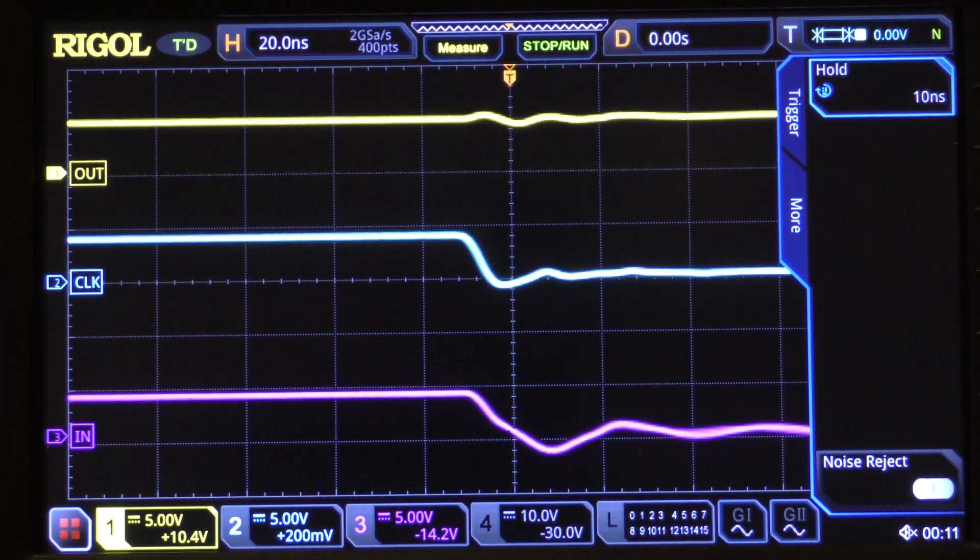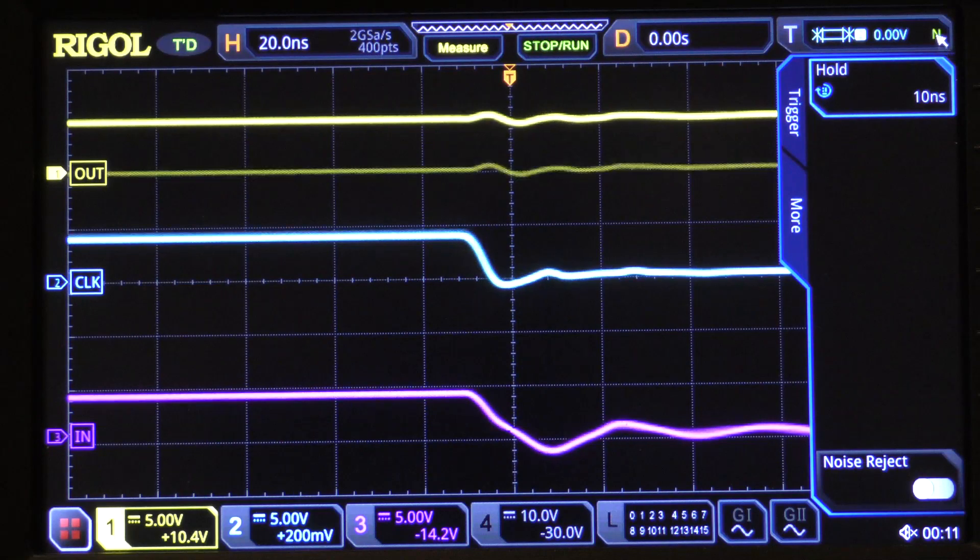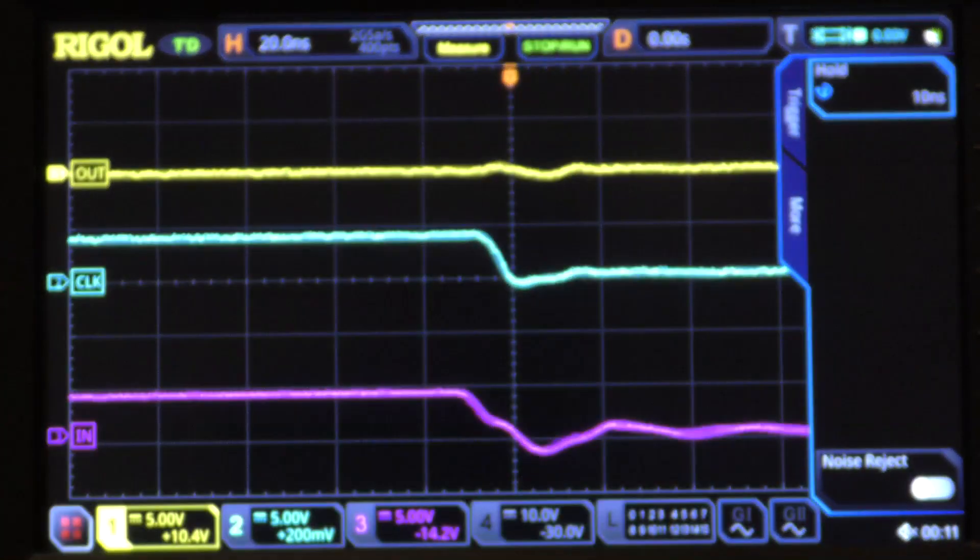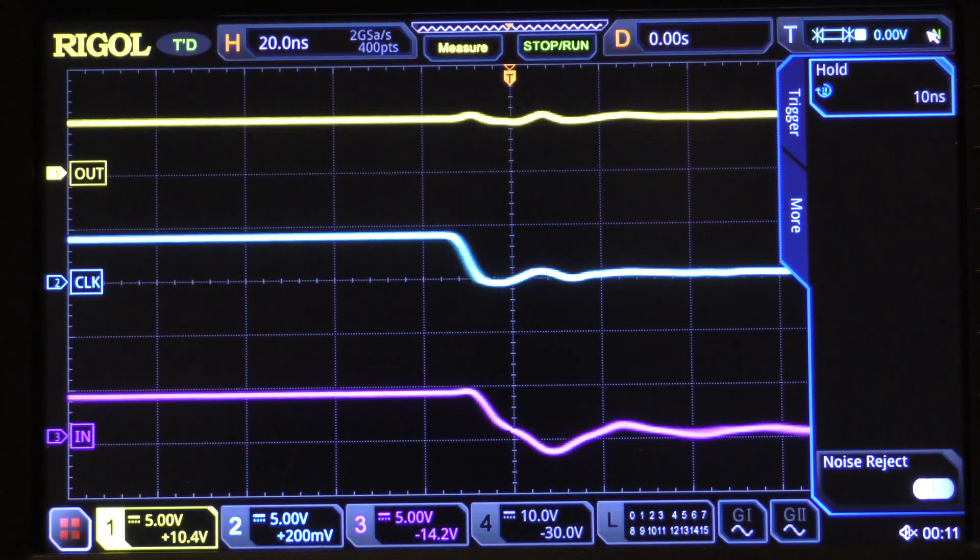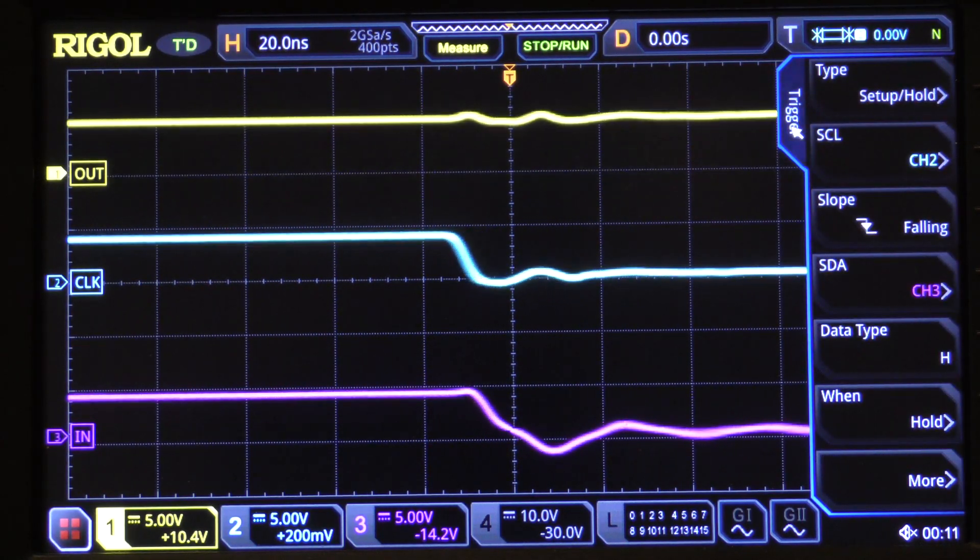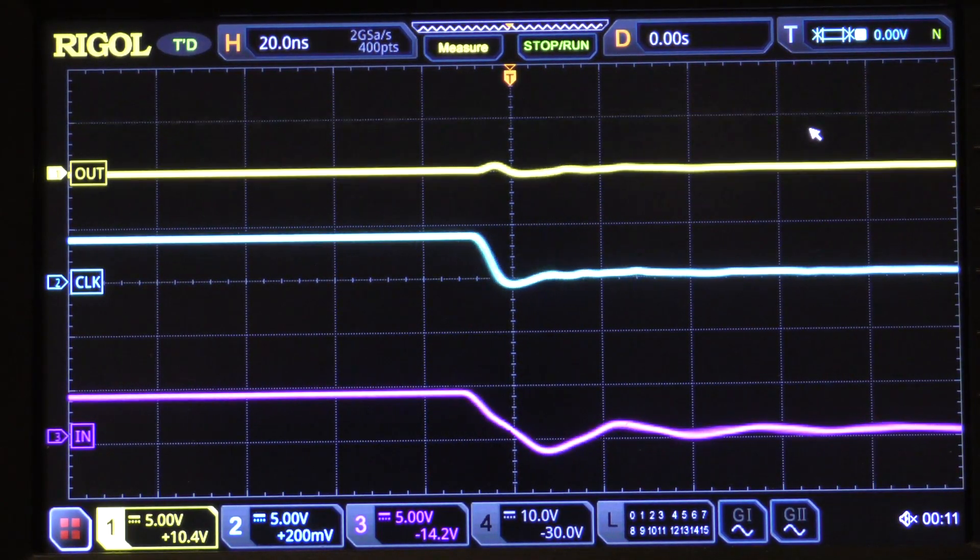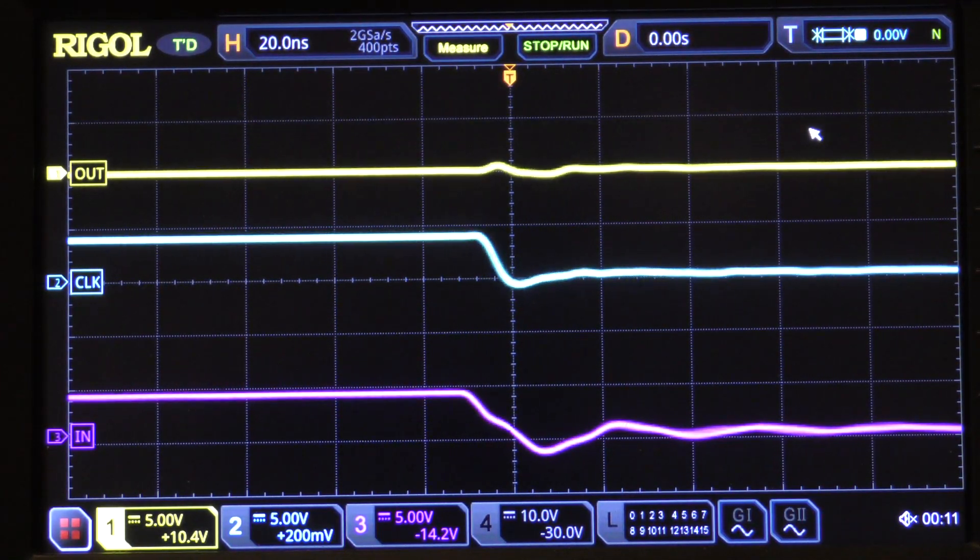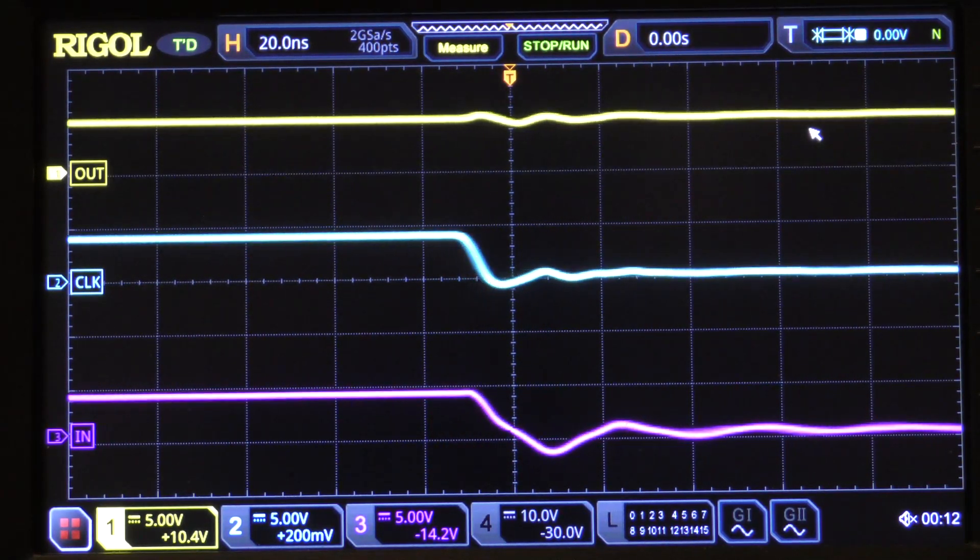Notice also that we are using a normal trigger up here in the upper right hand corner. We're using a normal trigger, not an auto trigger. So that is how we set up a hold time trigger on the MSO5000 to detect a hold time violation in your circuit.